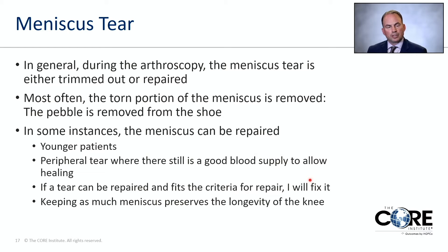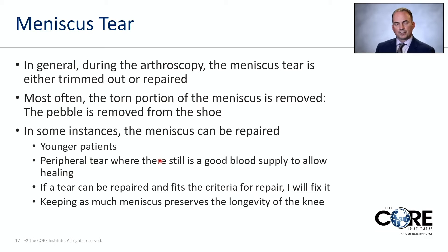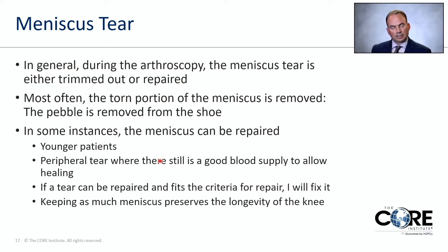During arthroscopy, the meniscus is either trimmed out or repaired. Most often, the torn portion is removed — the pebble is removed from the shoe. In some instances, especially in younger patients with a peripheral tear on the outer aspect where blood supply is still good, the meniscus can be repaired. As much meniscus as we can leave in the knee, we leave in — keeping as much meniscus preserves the longevity of the knee, since removing some can lead to earlier arthritic change.